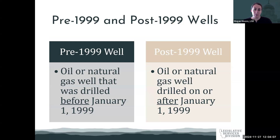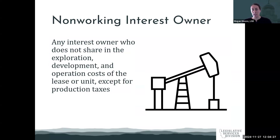Two other important terms are pre-1999 and post-1999 wells, which are exactly what they sound like. The taxation varies based on whether the well was drilled before January 1st, 1999, or on or after January 1st, 1999. The final term is non-working interest: a non-working interest owner is a person who does not share in the exploration, development, and operation costs of the oil lease or unit, and they only contribute to paying production taxes.